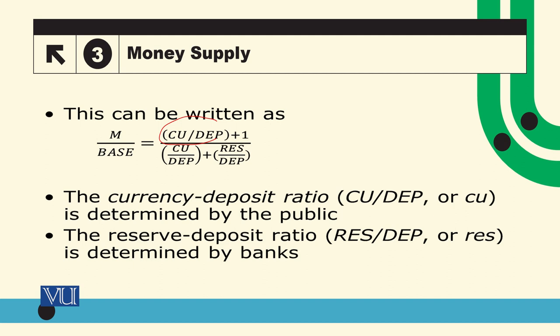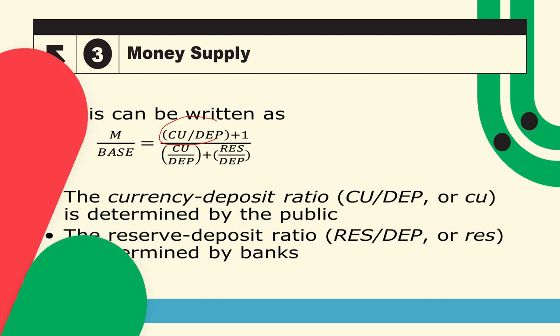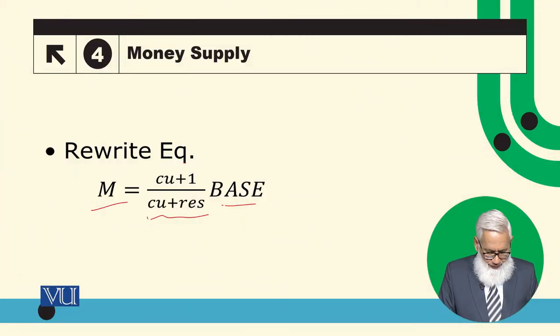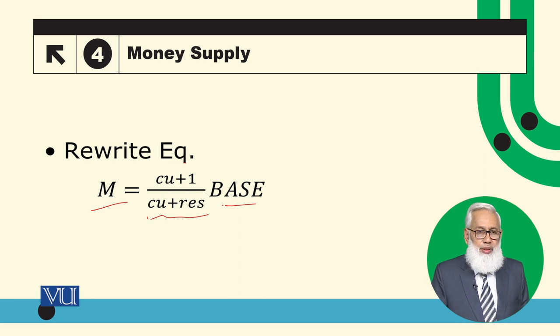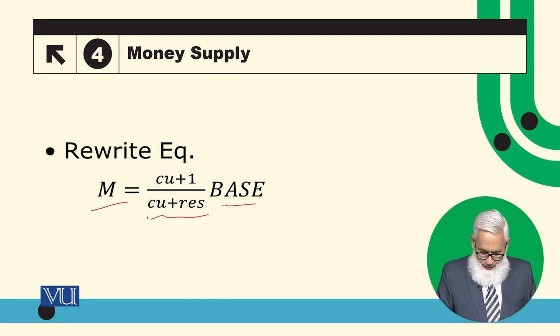The currency-deposits ratio is denoted by small cu, and it is determined by the public — the public determines how much of their total holdings are in the form of currency versus deposits. The reserve-deposit ratio is determined by the bank. Rearranging, money supply equals the money multiplier multiplied by the monetary base, where this expression is the money multiplier and M is the money supply.